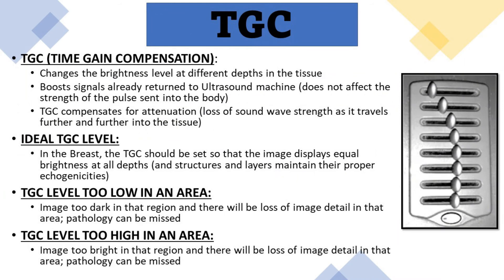The next brightness control is called TGC, or time gain compensation. TGC changes the brightness level at different depths in the tissue, and each of the TGC knobs can be adjusted separately to adjust the brightness at that specific depth. TGC boosts signals already returned to the ultrasound machine, so it does not affect the strength of the pulse sent into the body. TGC compensates for attenuation, which is the loss of sound wave strength as it travels further into the tissue. In the breast, TGC should be set so that the image displays equal brightness at all depths and structures maintain their proper echogenicities.